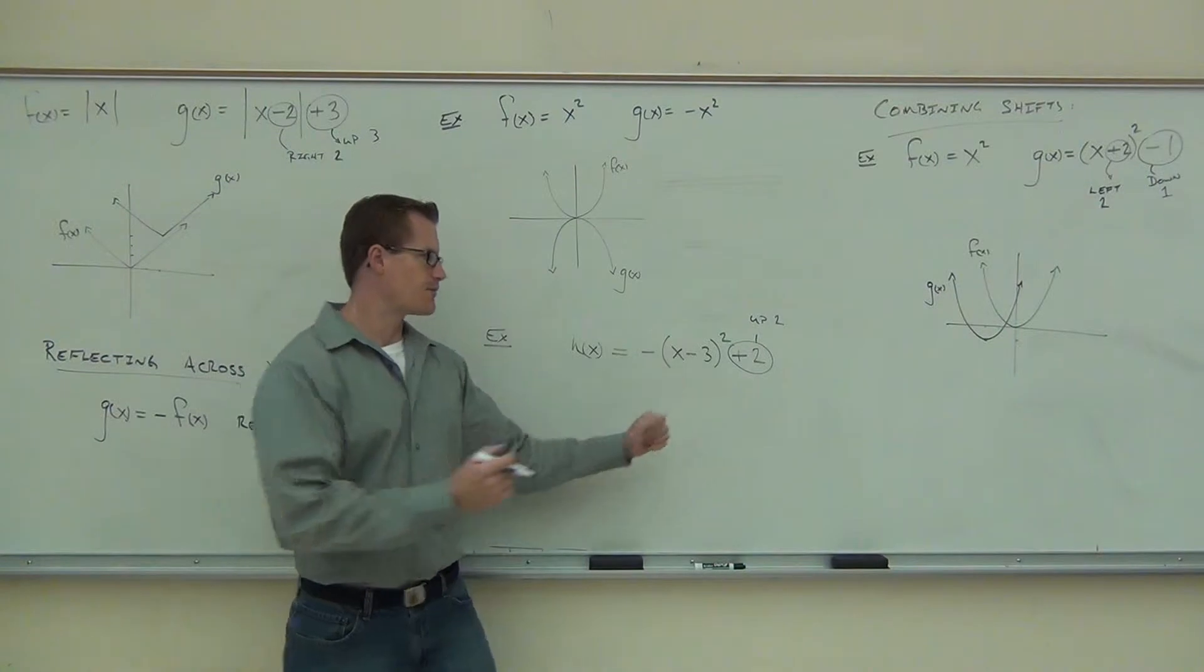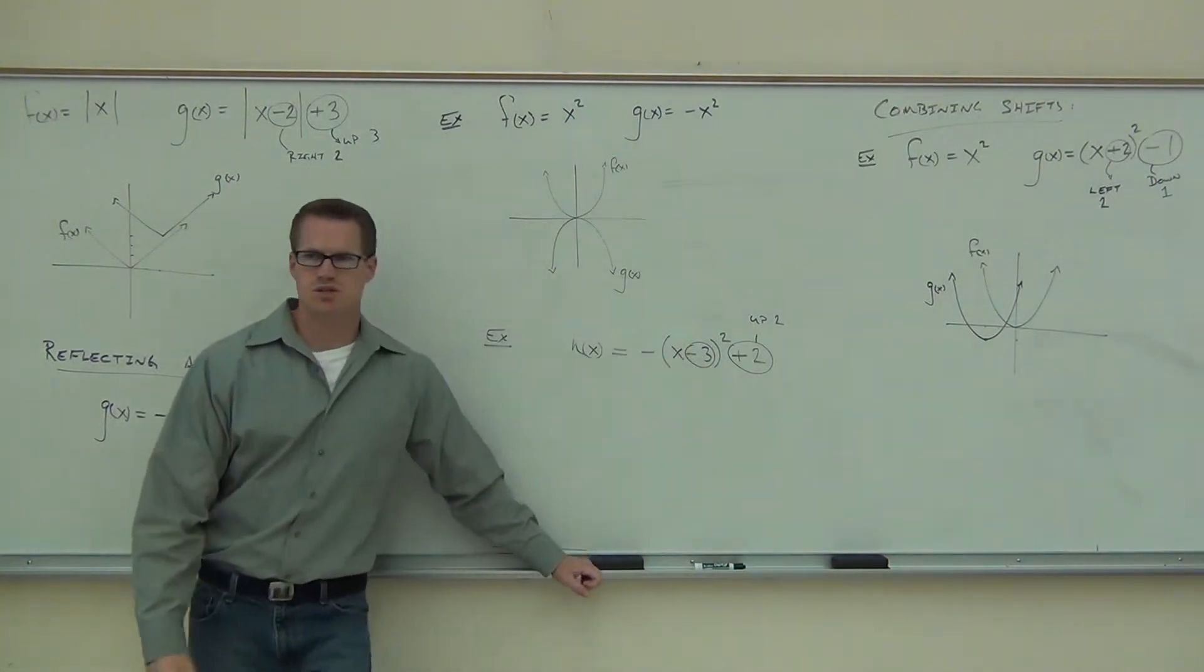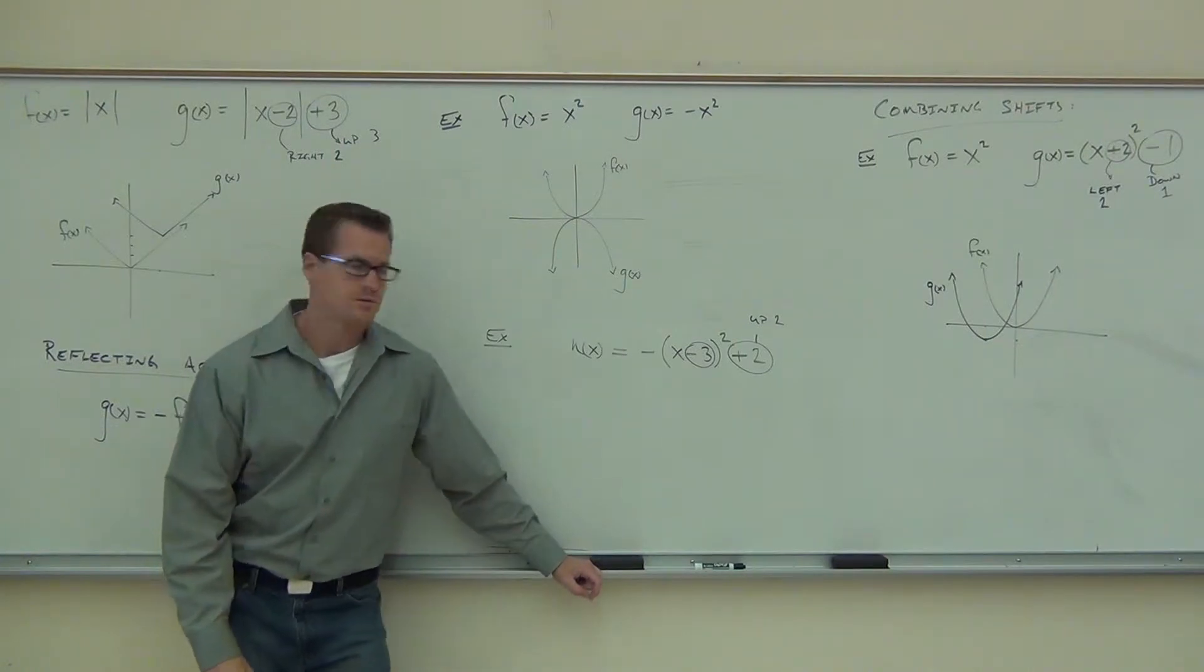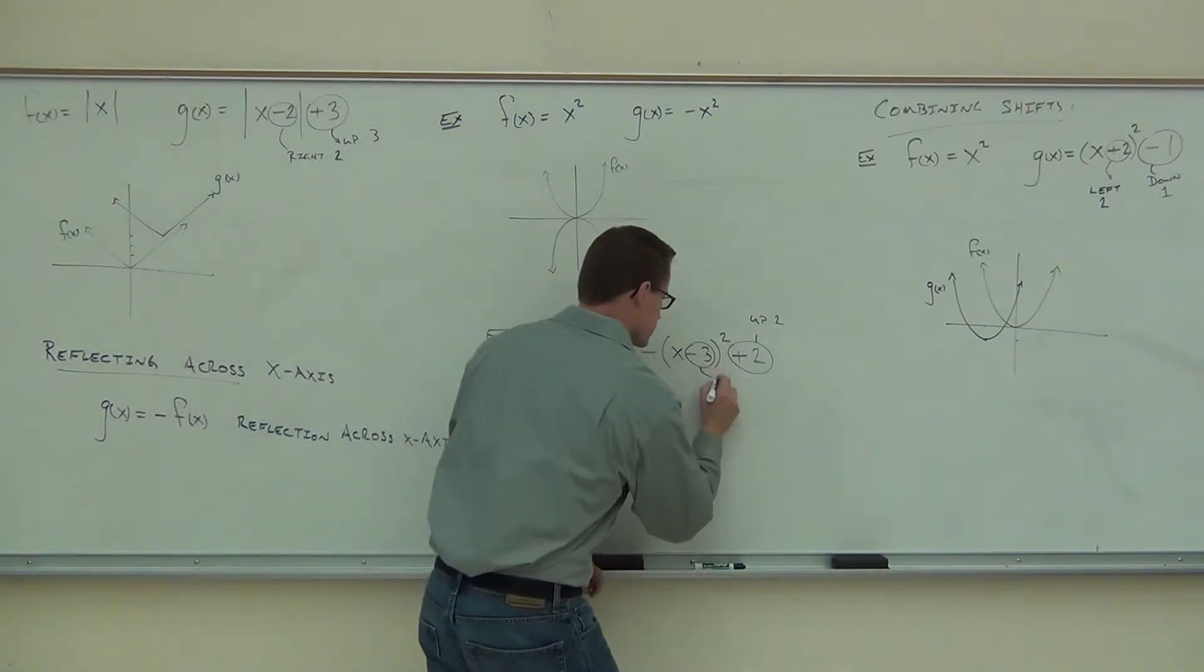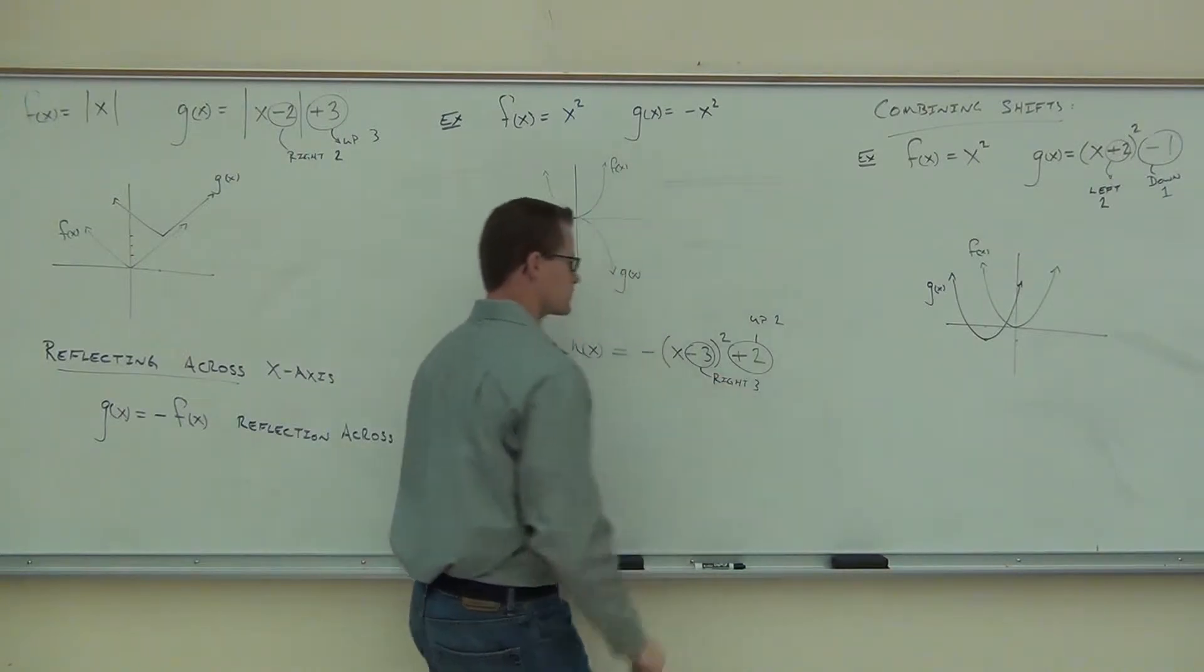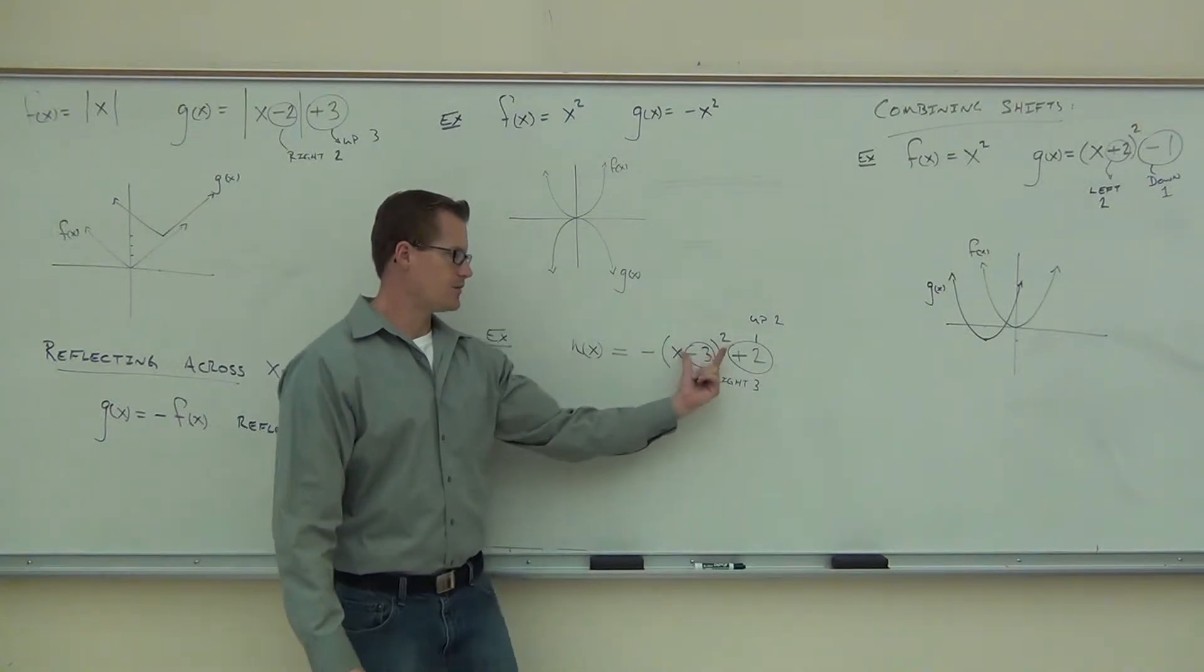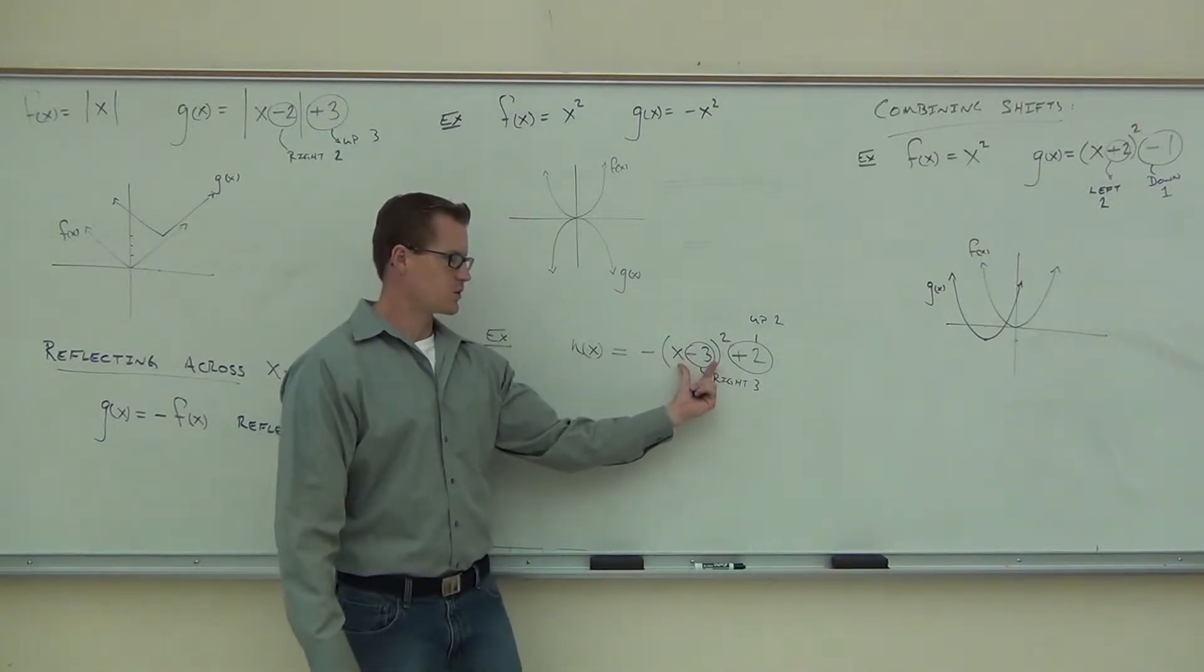But inside of our graph, this thing, or inside our function, this thing does something. That minus 3 should shift it somehow. How does it shift it? Right. Good. So, so far we have up 2, it was at the end. We moved a little bit to the left. We have right 3, we're going to move to the right.